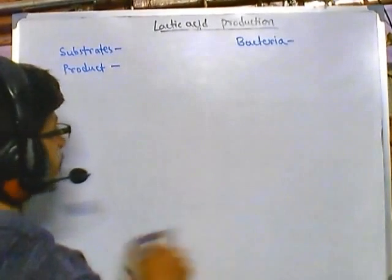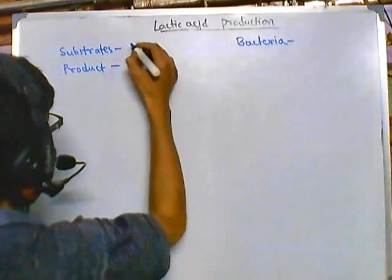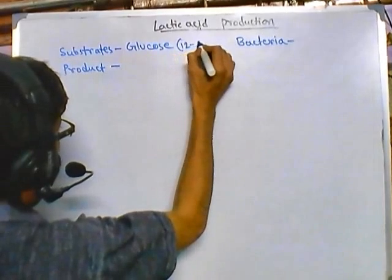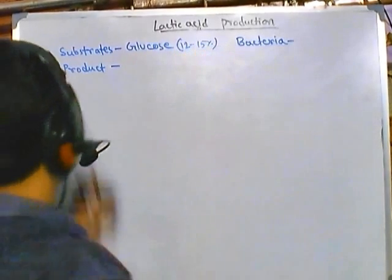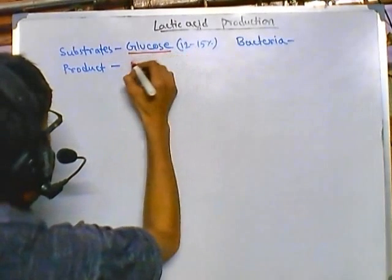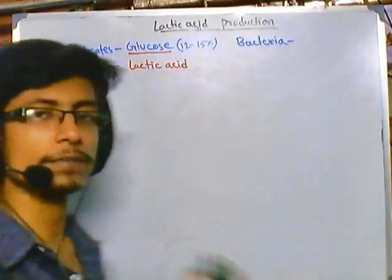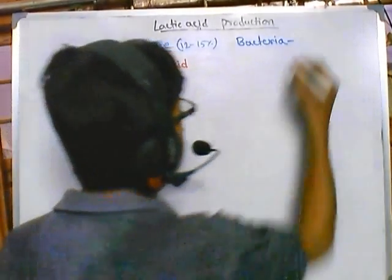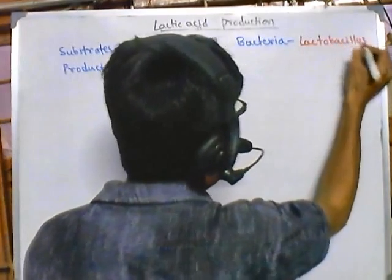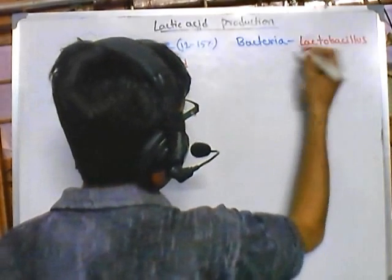The substrate in this case is glucose — it is a simple conversion of glucose into lactic acid. Usually 12 to 15 percent glucose is taken as the substrate. The product will be lactic acid, and the bacteria used are lactic acid fermenting bacteria of the Lactobacillus type — specifically Lactobacillus bulgaricus or Lactobacillus delbrucki.